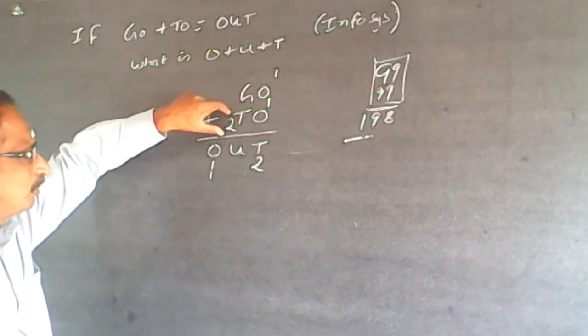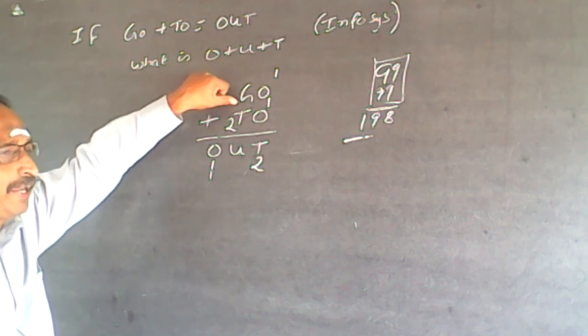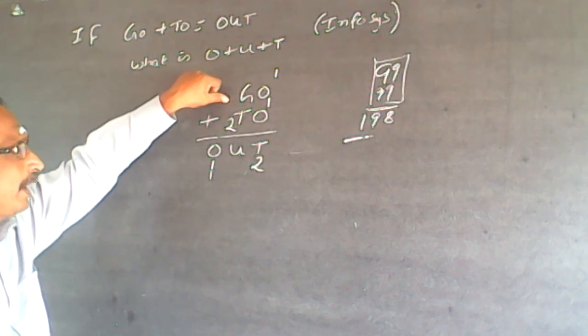Now, there are two possibilities. Because 2 is here, there is no carryover from here. So, G can only be 8 or 9.